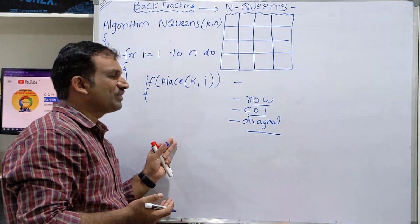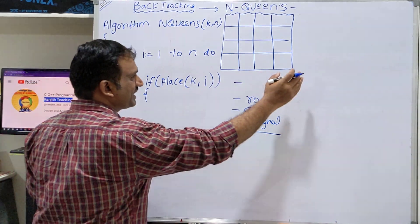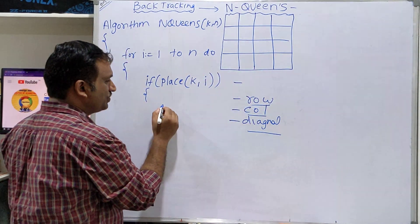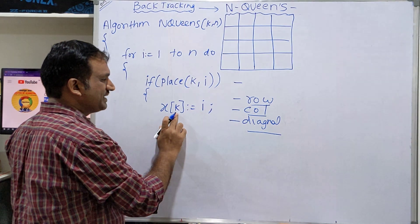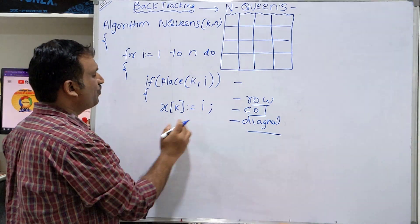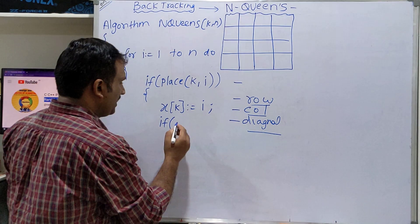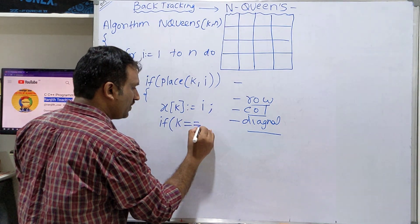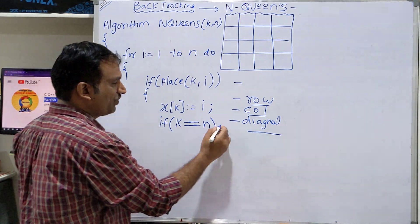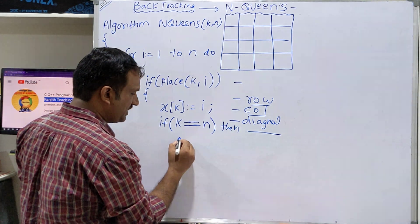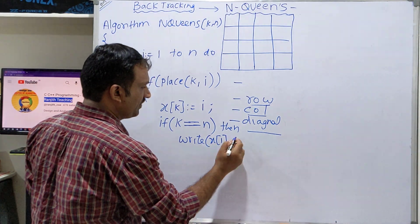Assume the condition is true. If place(k, i) returns true, then we write the solution x[k] = i. That means we want to place the kth queen in the ith column. Then we check whether we have completed placing all queens — that is, if k equals n.